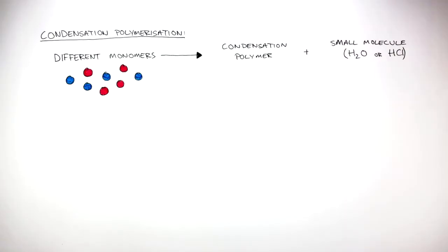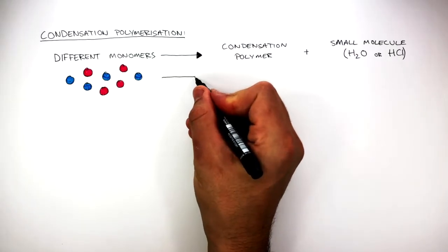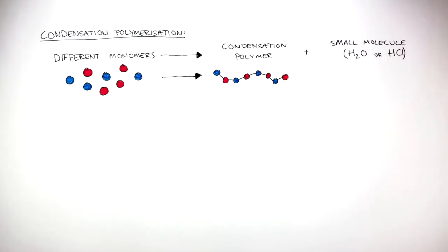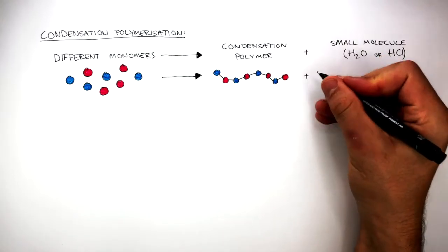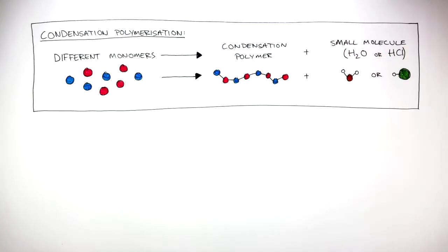These different colored circles represent the different monomers, which are small reactive molecules. They add together to form a condensation polymer, which is a large molecule made of different monomers, and we can see how a small molecule is formed, which is normally water or can also be hydrogen chloride.